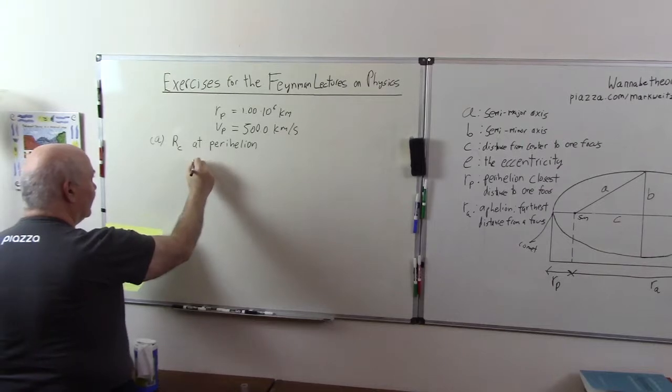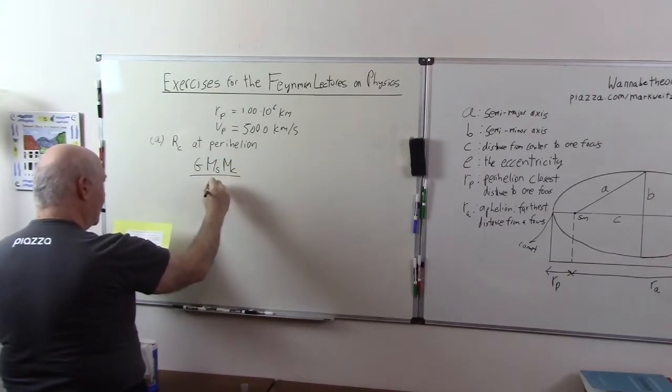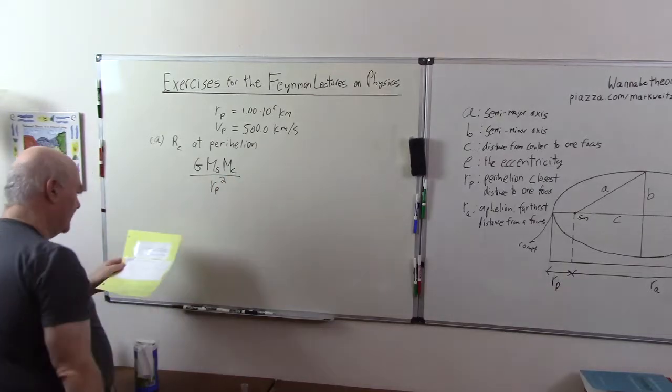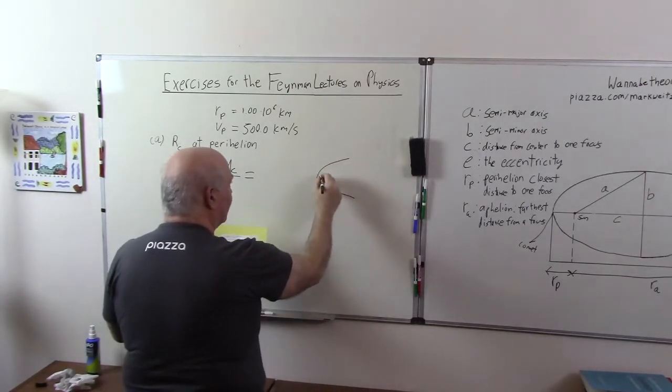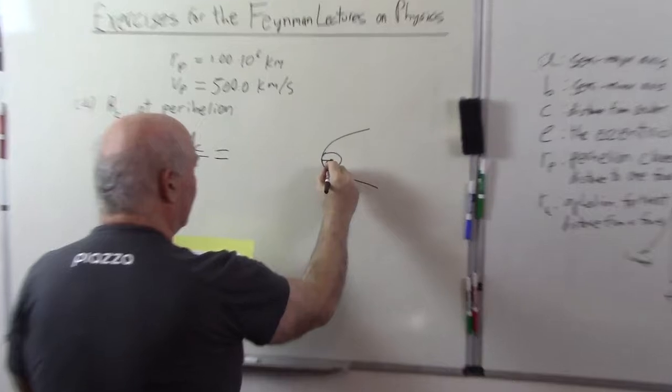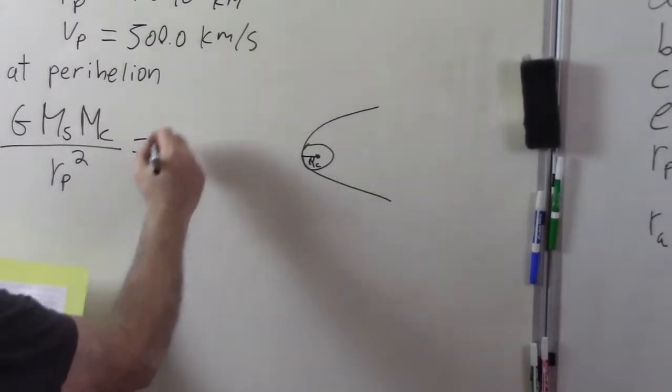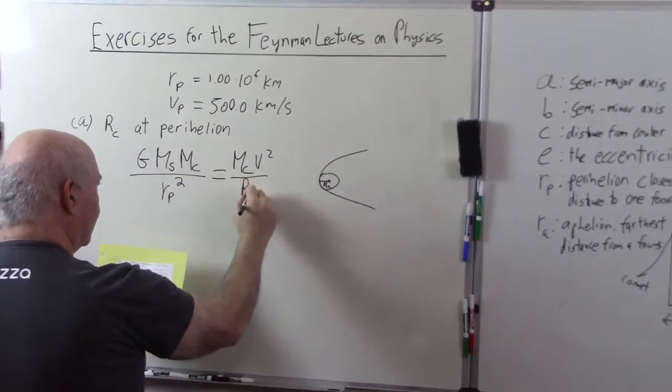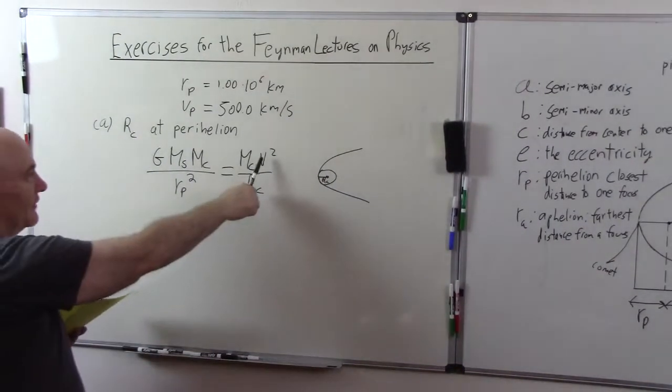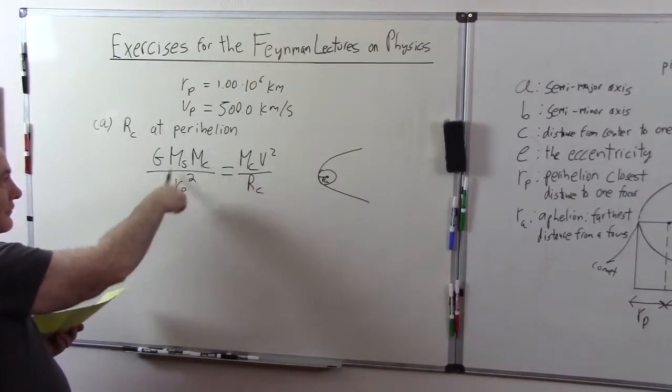What we use is the fact that the force between the sun and the comet, GMsun times Mcomet divided by RP squared. This force is equal to, we know at the perhelion, it's really like a circle here, this is what we want, the radius of curvature, RC. So it's really going in a circle at that point, and we know from circular motion what the force is going to be. It's just going to be the mass of the comet times the velocity squared divided by the radius of curvature. This is the old MV squared over RC. This gives us V squared over RC is the acceleration, the circular acceleration, times the mass is the circular force, and this is the only force in the problem, gravity.